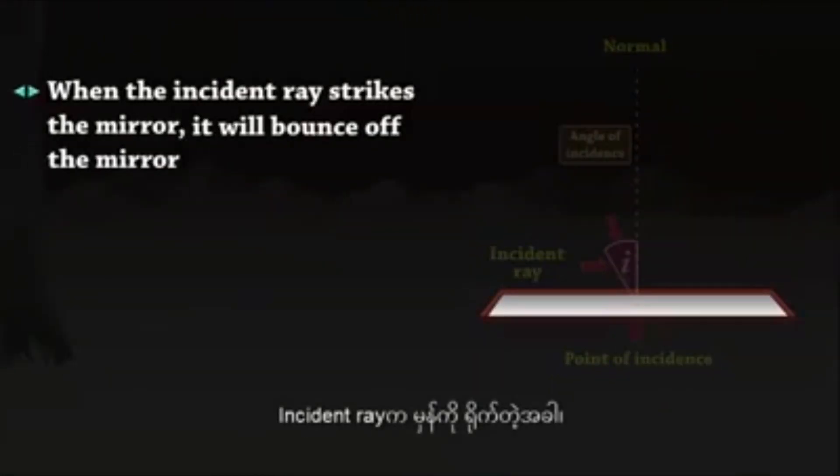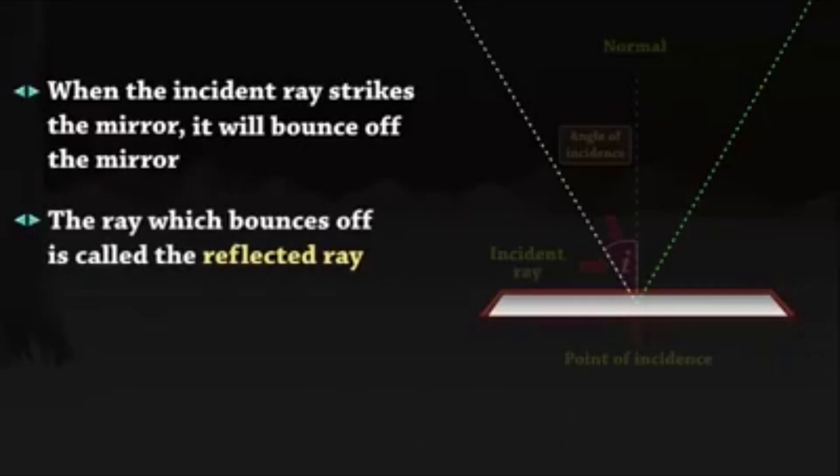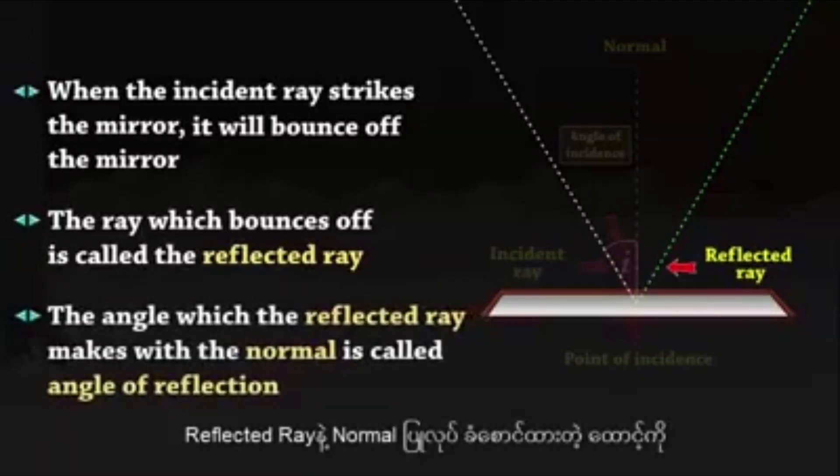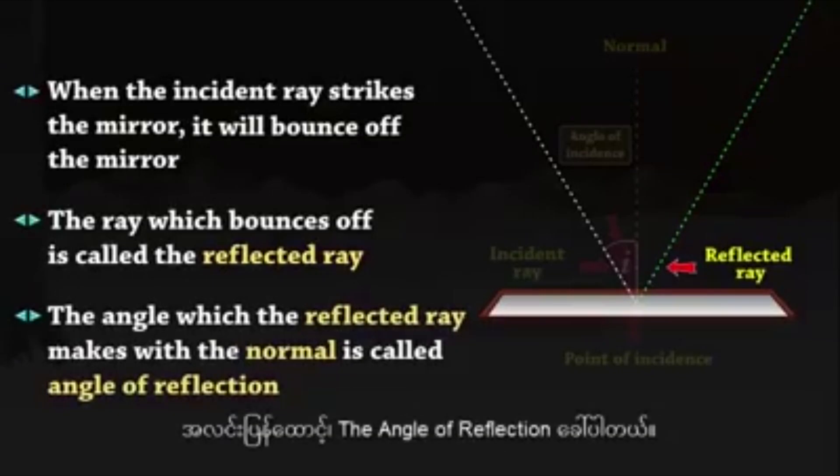When the incident ray strikes the mirror, it will bounce off the mirror. The ray which bounces off is called the reflected ray. The angle which the reflected ray makes with the normal is called angle of reflection.